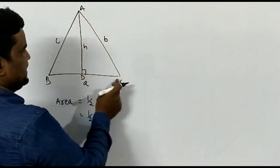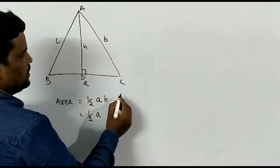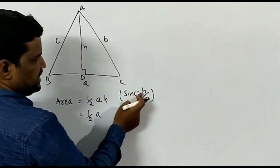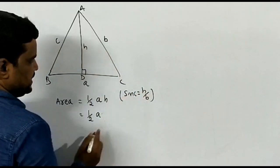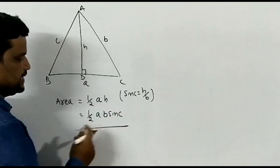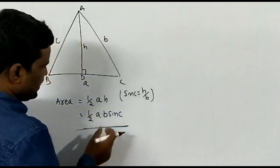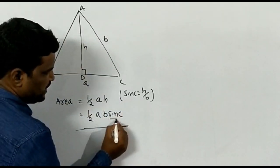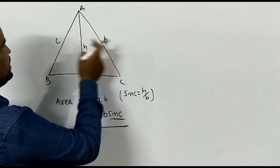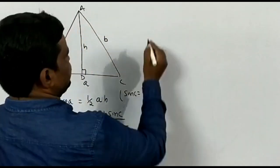From triangle ADC, sin C = H / B, so H = B·sin C. Therefore Area = (1/2) × A × B·sin C. Now we can find the value of sin C in terms of A, B, and C using the cosine rule.